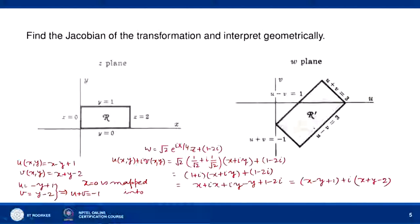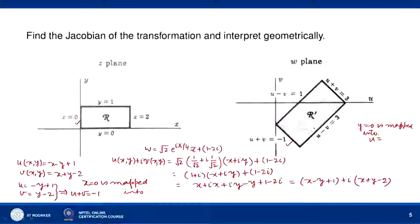Similarly, when y = 0, u = x + 1 and v = x - 2, so u - v = (x + 1) - (x - 2) = 3. So y = 0 is mapped into the line u - v = 3.